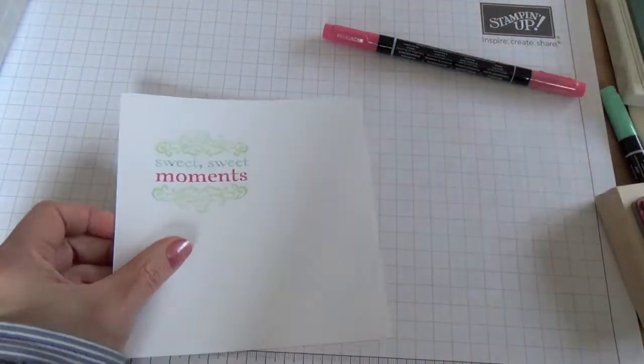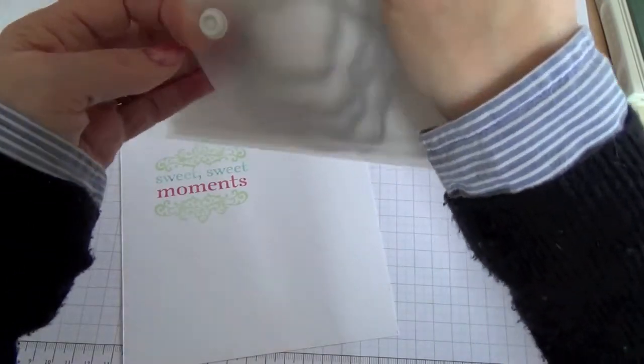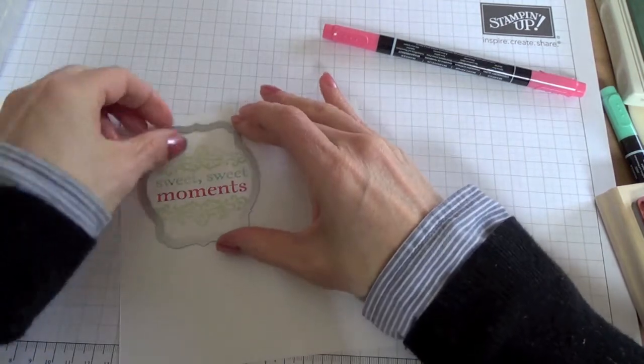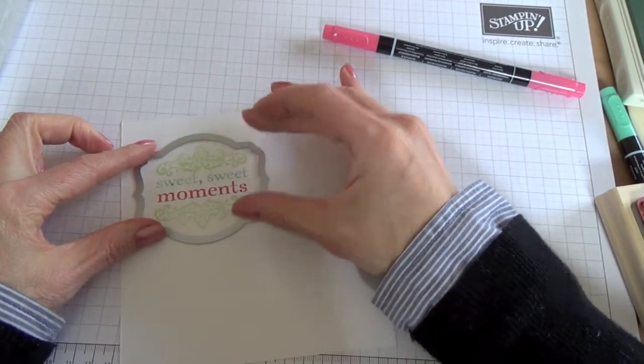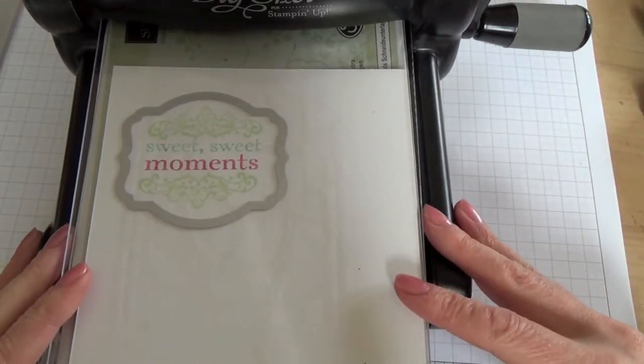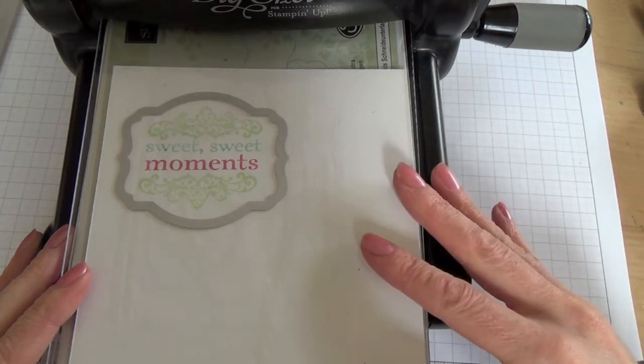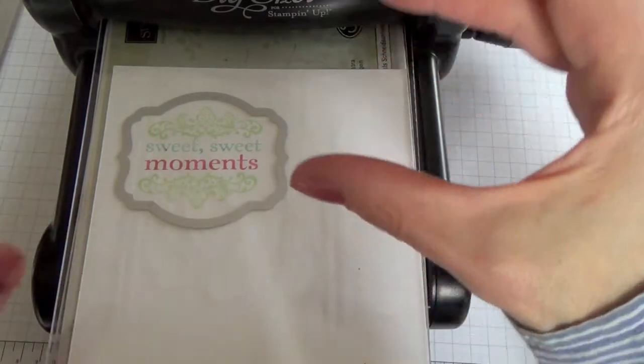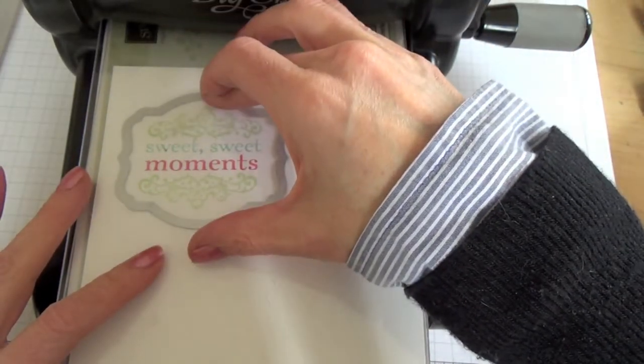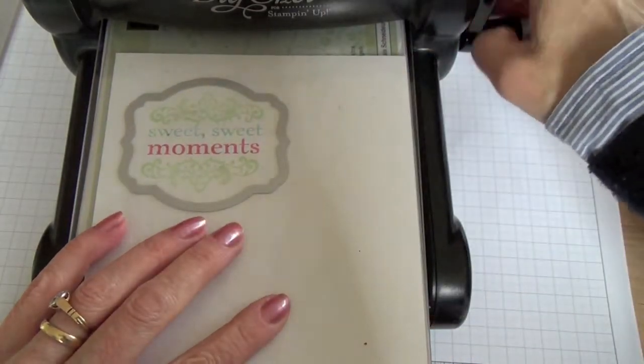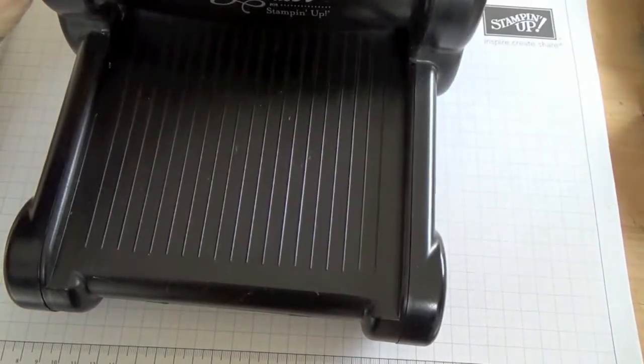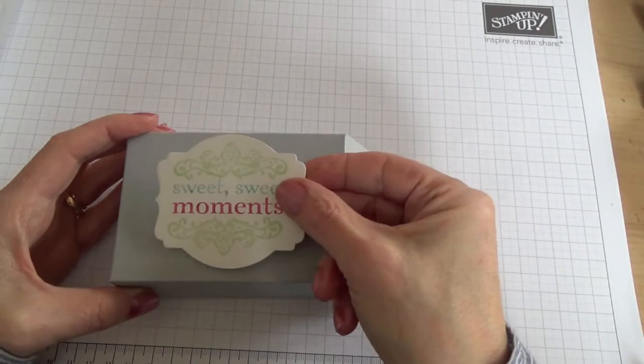Now I'm going to take my label framelit and position that over my stamping and run that through the Big Shot. If you've not tried the magnetic board yet, you really have to try it because it makes using framelits so easy. The magnetic pull of the board just makes the framelit stick straight on, so of course, you don't have to worry about it moving as you roll it through your Big Shot.